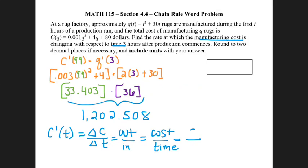Cost is measured in dollars, and in this particular problem, time is measured in hours. So to write my final answer, the rate at which the manufacturing cost is changing with respect to time is 1,202.51, because I'm only answering two places to the right of the decimal, dollars per hour.